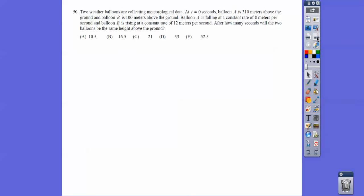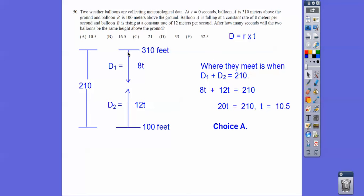Two weather balloons are collecting some data. At time t equals zero, balloon A is at 310 meters above the ground and it's falling, and balloon B is 100 meters above the ground and it's rising. A is falling at a rate, remember distance equals rate times time, so eight times t, eight meters per second. And balloon B is rising at 12 meters per second. So this guy is falling at eight meters per second, this one is rising at 12 meters per second. So this distance plus this distance equals 210. So solve for t, we get 10.5. Alright you guys, I hope you do great on your test, and take care.